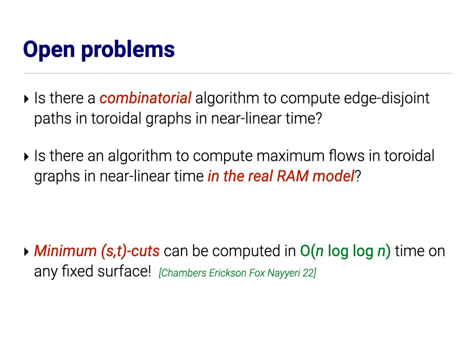So, what I'd really like to know is whether there's a combinatorial algorithm to compute edge-disjoint paths in graphs on the torus in near linear time. Combinatorial basically means you can add and subtract and multiply and do linear algebra pivot-y things, but nothing that involves numerics. Another way of saying exactly the same thing, is there an algorithm to compute maximum flows in graphs on the torus in near linear time in the real RAM model? So, as a born-and-bred computational geometer, it's completely natural to me to think about algorithms that manipulate real numbers exactly in constant time. And this is, in fact, what we already do in textbook presentations of things like Dijkstra's algorithm and Ford-Fulkerson and Gaussian elimination, we just analyze the number of arithmetic operations. So, can you do that here with maximum flows in the torus as we can in the plane?